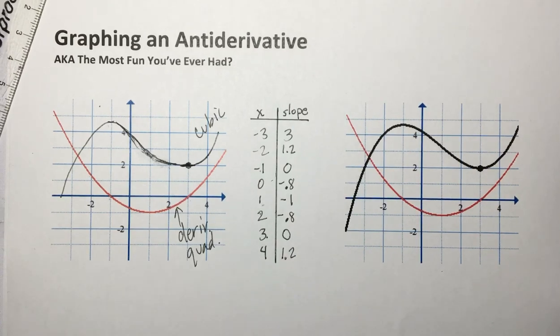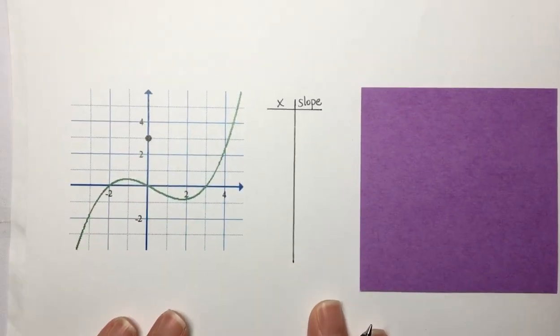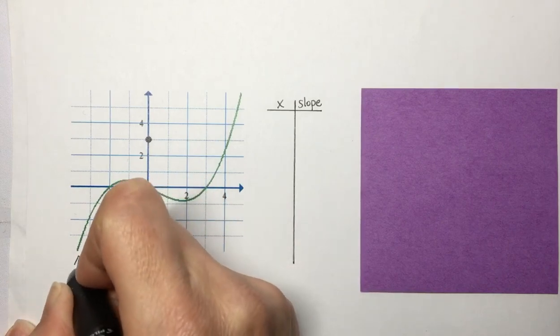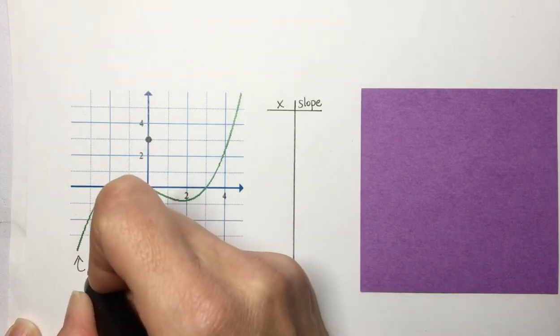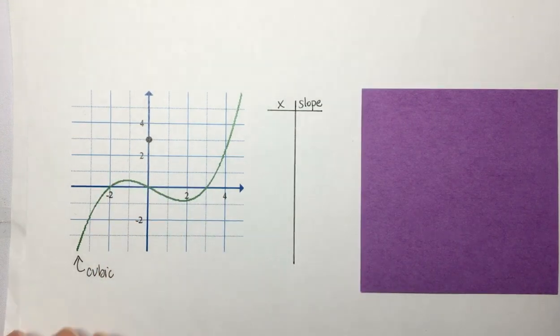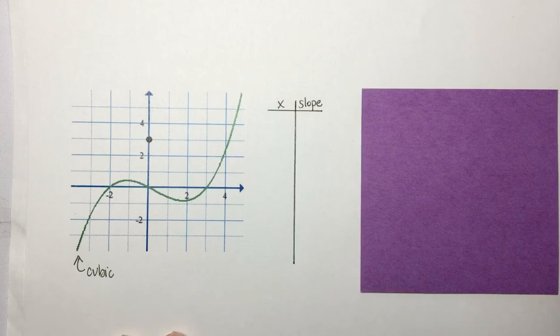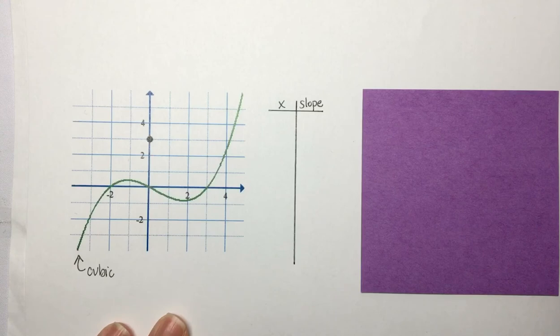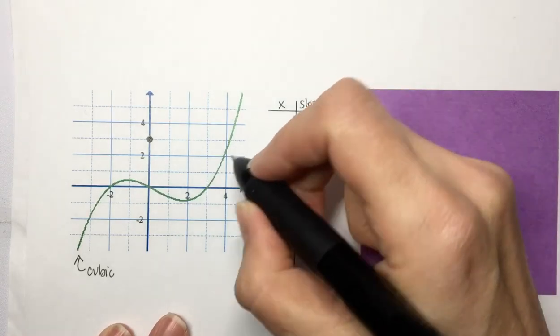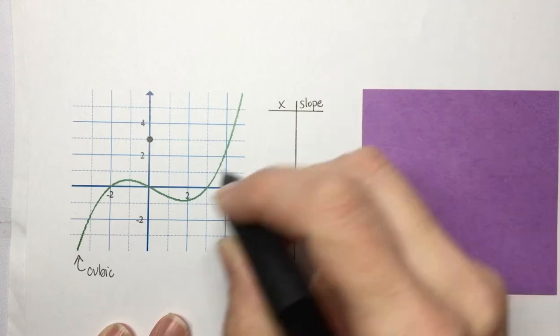Second example, we're going to go a little trickier. So this time, our derivative is apparently a cubic. So that tells me that my antiderivative, the thing that has a derivative that's cubic, is a quartic, an x to the fourth graph, which an x to the fourth graph often looks kind of like a sloppy W. The thing I know is that at zero, it goes through the point three, and also at zero, my slope is zero. So I'm going to put this in the middle, because I'm going to be moving left and right. So at zero, my slope is zero.